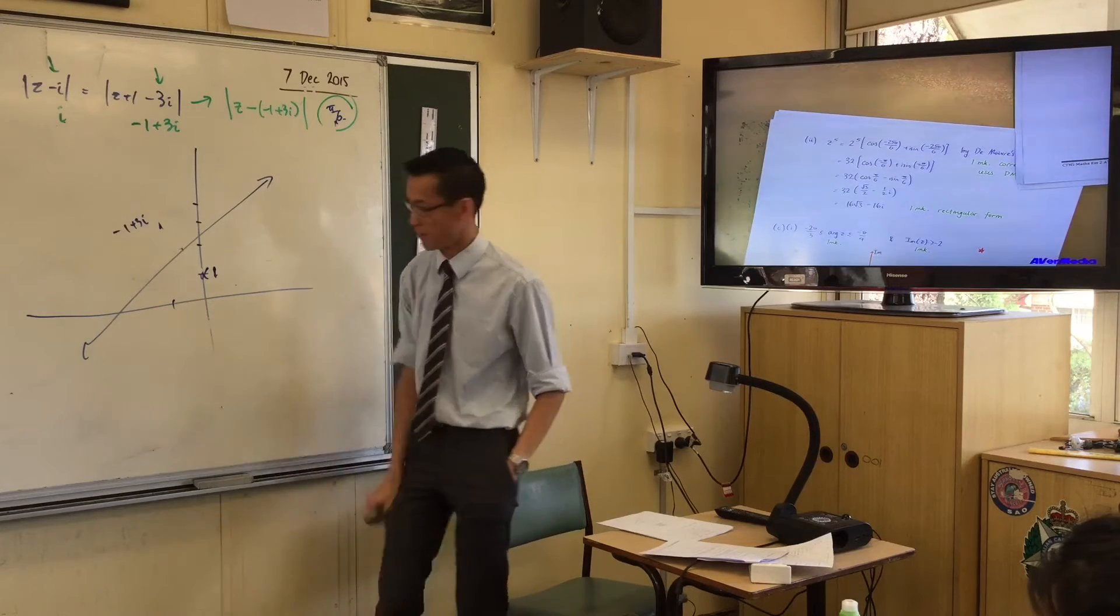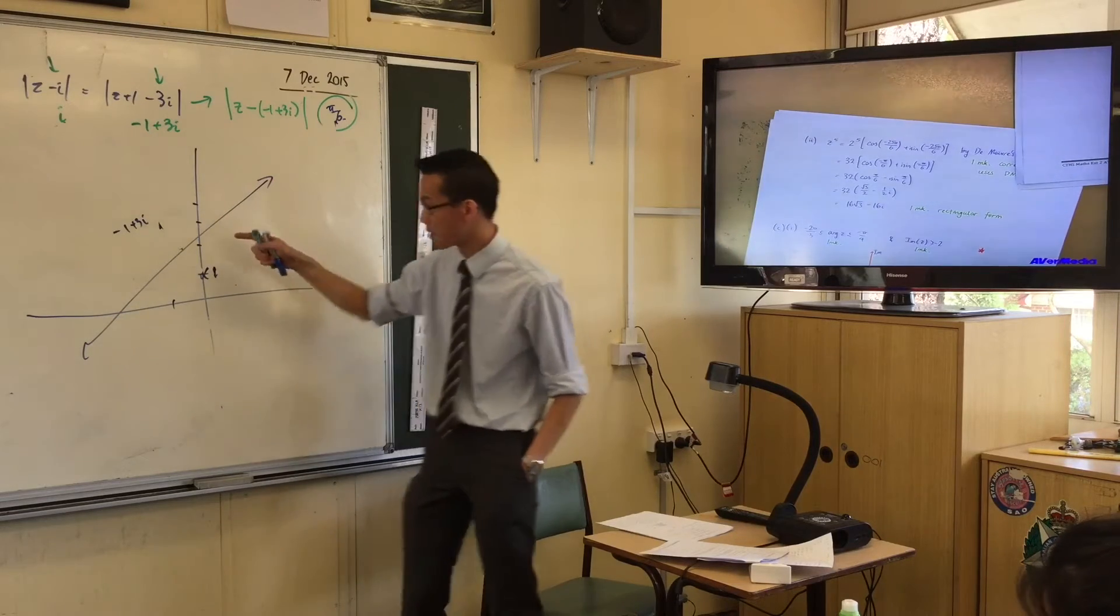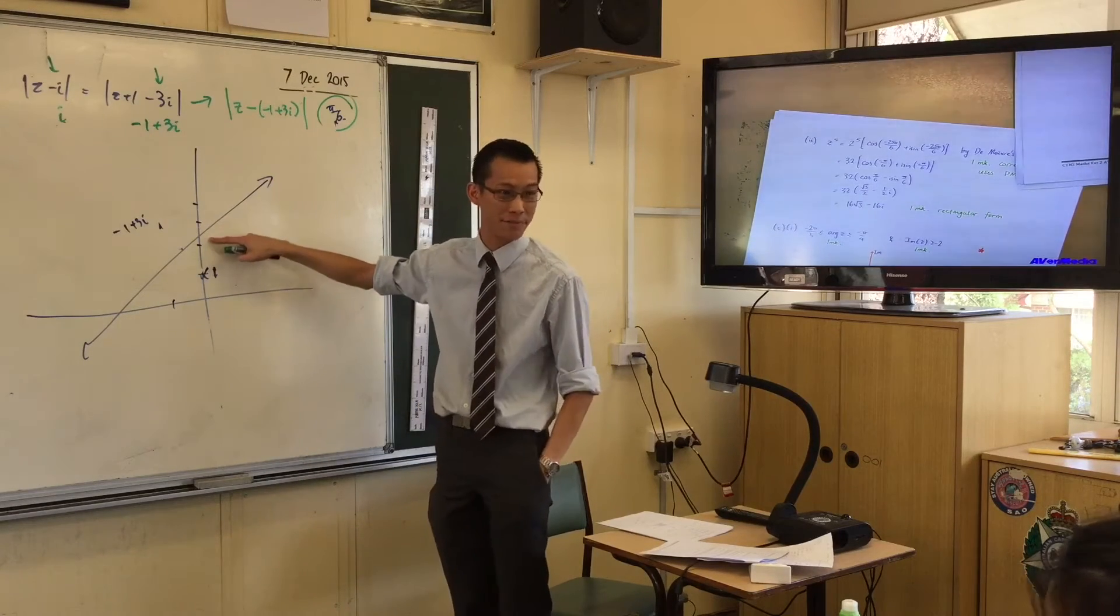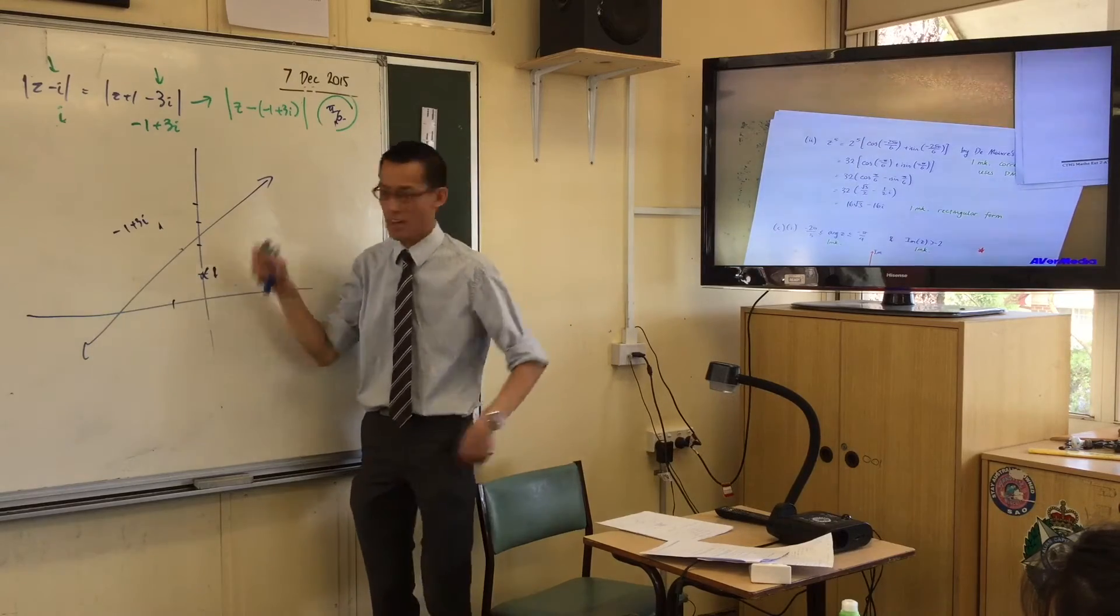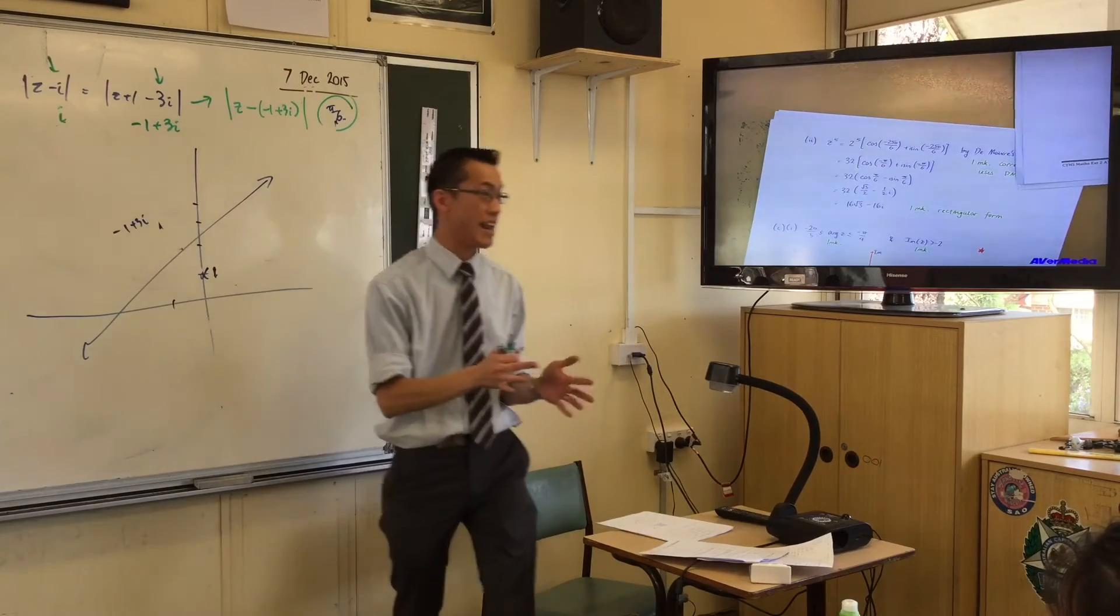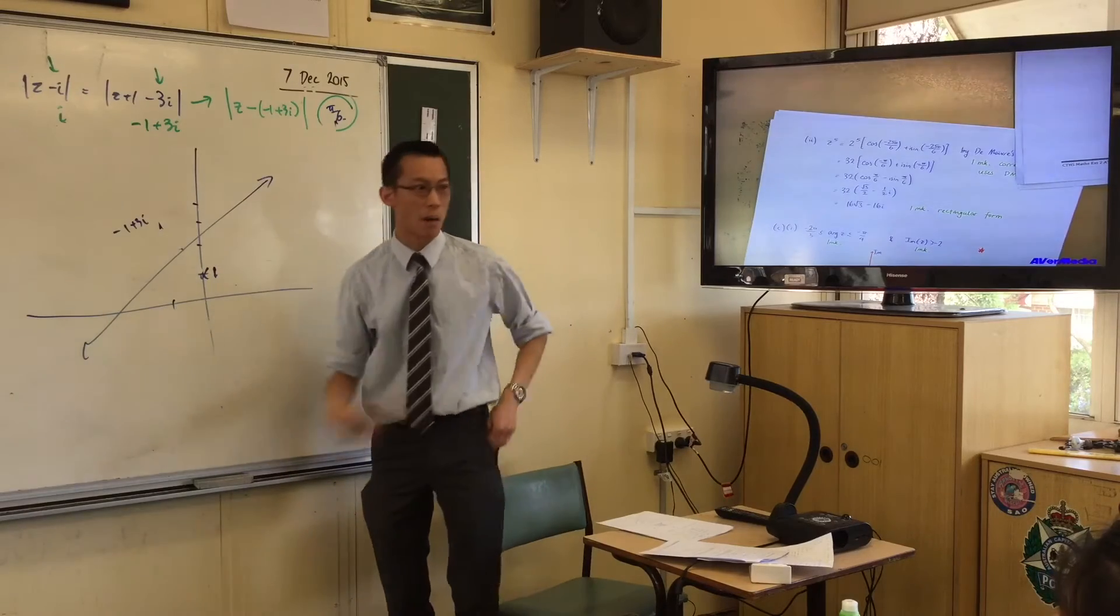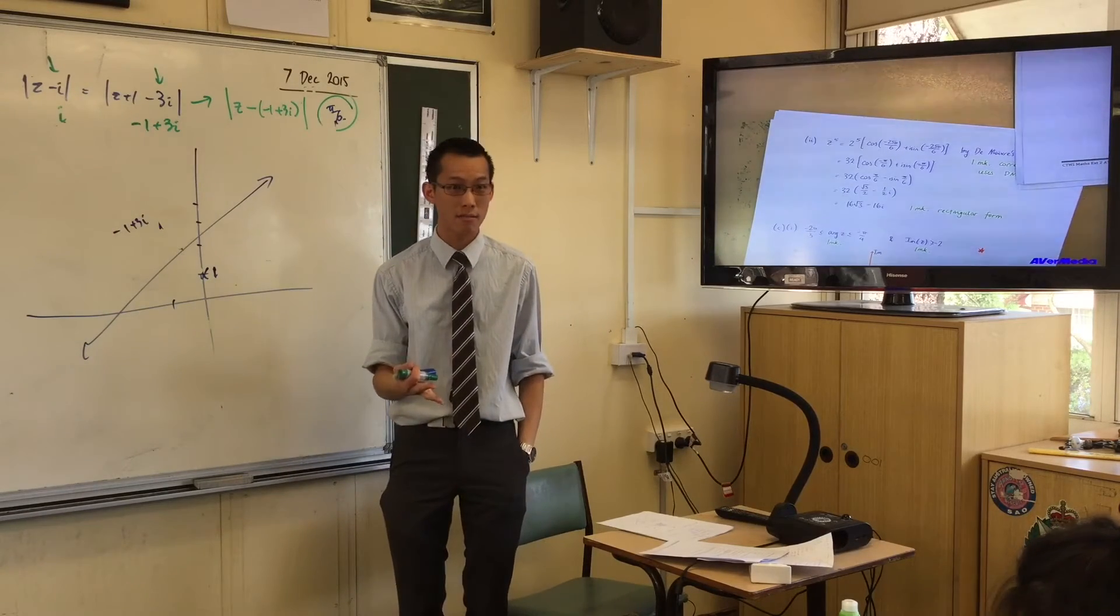It's this straight line. It's got gradient 1/2, it's got a y-intercept of 9 over 4, 2 and 1/4. It's that line. Do you agree that it's completely unambiguous that this line is part of my locus? Do you agree with that?